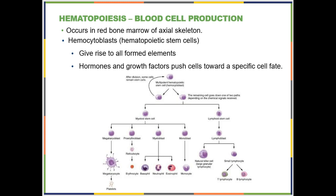We want to talk about red blood cell production, but first let's talk generally about how blood cells are made. Whether it's a red blood cell, a white blood cell, or a platelet, we call the process hematopoiesis. This takes place in the red marrow. All of your formed elements are derived from the same stem cell: the hemocytoblast.